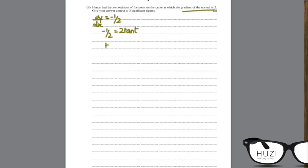So tan t equals minus 1 upon 4. You get your value of t by arctan of minus 1 upon 4, and you get minus 0.245.